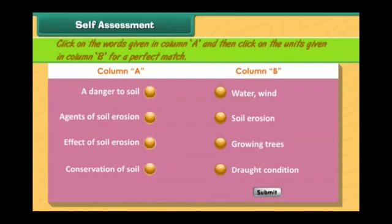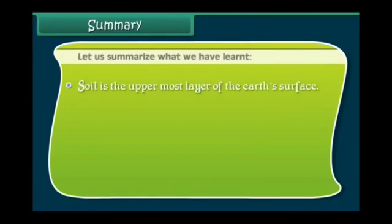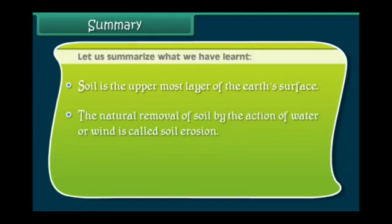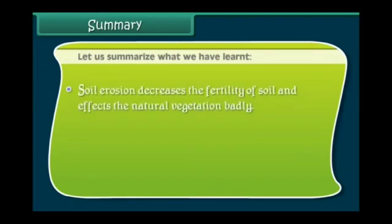It is our duty to conserve soil for keeping the environment healthy. In summary: soil is the uppermost layer of the earth's surface. The natural removal of soil by the action of water or wind is called soil erosion. Water and wind movements, along with human activities, are responsible for soil erosion. Soil erosion decreases the fertility of soil and affects natural vegetation badly. Growing large numbers of trees and practicing modern techniques of farming can control soil erosion.